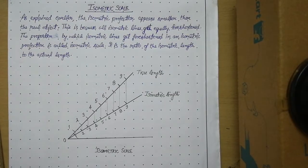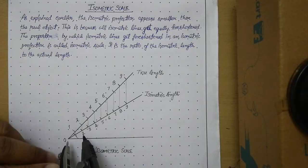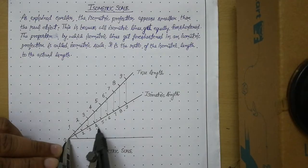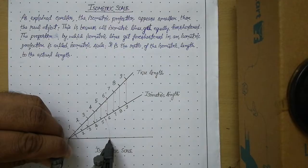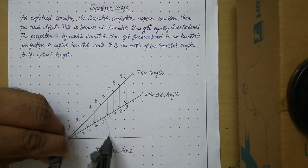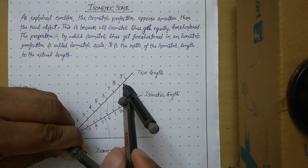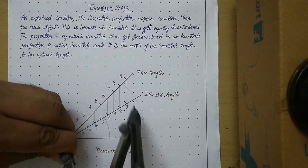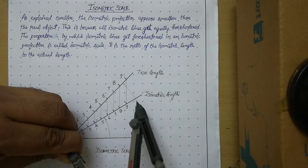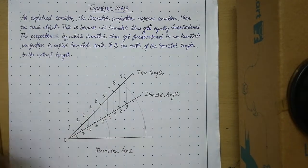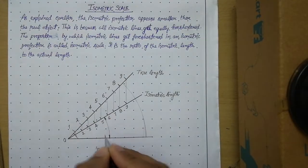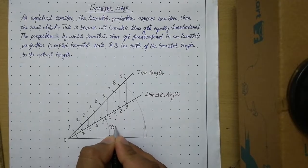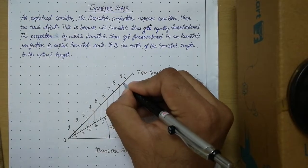We can also mark the angles on the diagram. The angle between the baseline and the 30 degree line is 30 degrees, and the angle between the baseline and the true length line is 45 degrees.